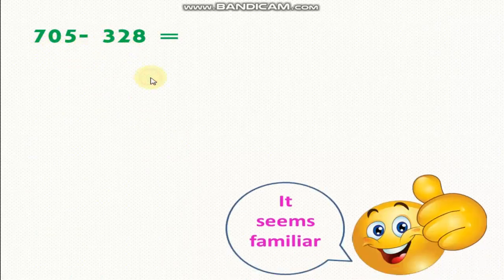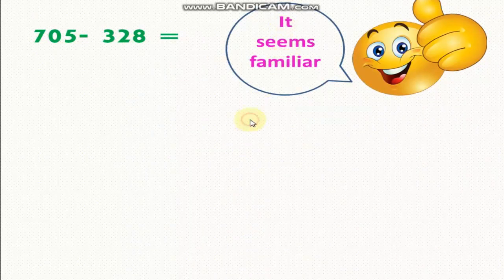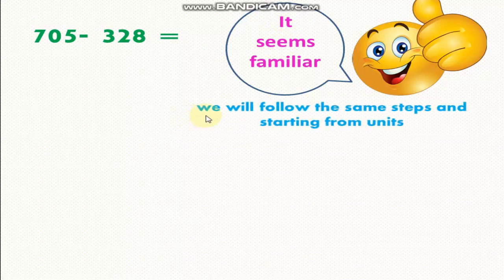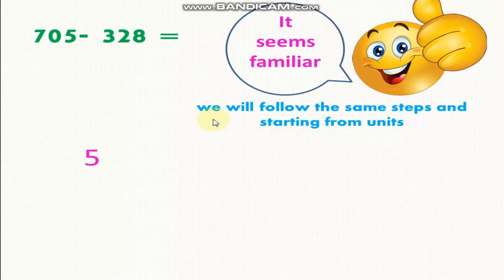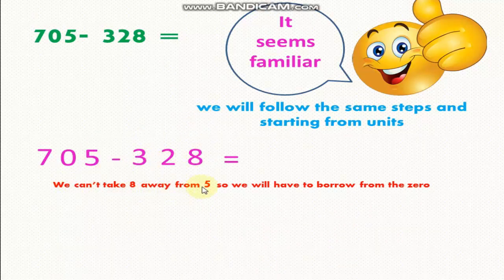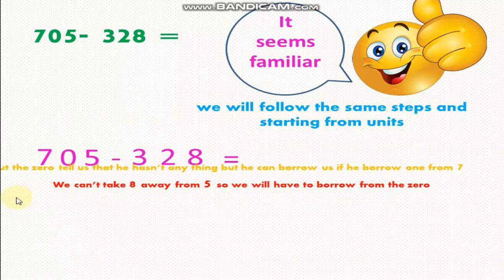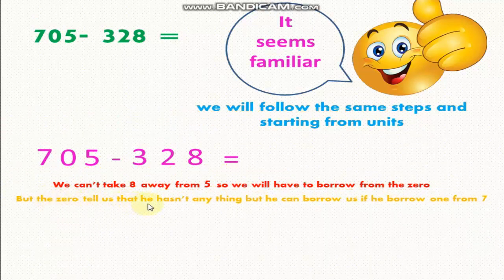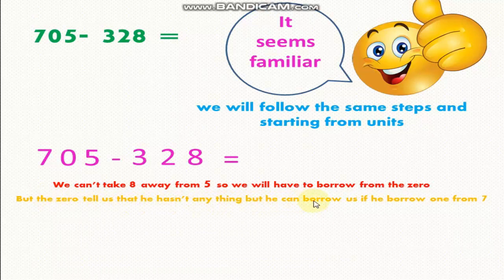705 minus 328. It seems similar. We will follow the same steps and start from units. 5 minus 8. We can't take 8 away from 5, so we'll have to borrow from the 0. But the 0 tells us that it hasn't anything. But it can borrow from the 7.